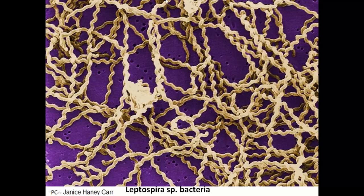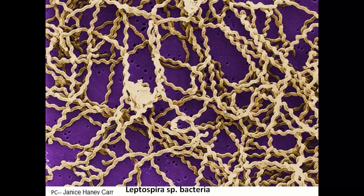This image is showing Leptospira — these golden, spring-like structures are Leptospira. The blue part is a filter where they have been caught and were not able to pass through. This entire image was taken by an electron microscope.